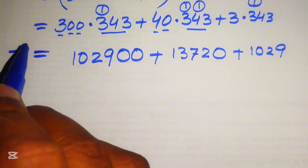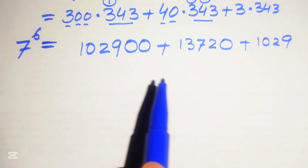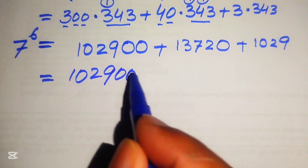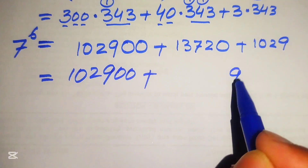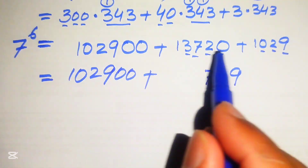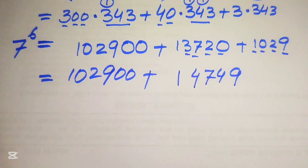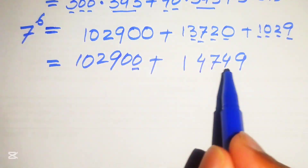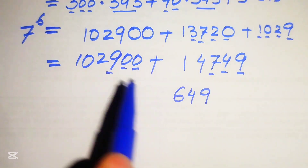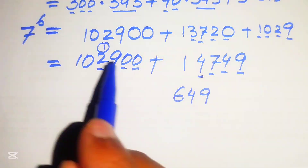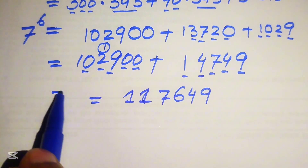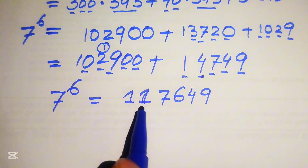We now sum up the three partial products to find 7 to the power of 6. First, adding 102,900 plus 13,720: 0 plus 9 is 9, 0 plus 2 is 2 — wait, combining carefully gives 116,620. Then adding 116,620 plus 1,029: 0 plus 9 is 9, 0 plus 4 is 4, 6 plus 2 is 8 — carrying through the addition. Finally, 7 to the power of 6 equals 117,649.